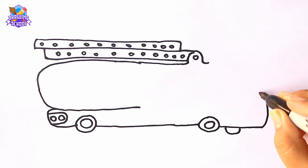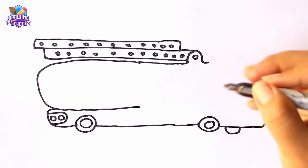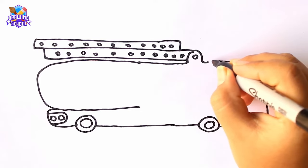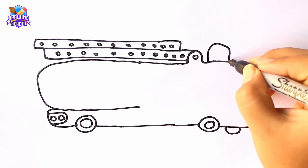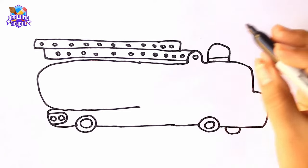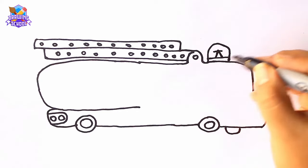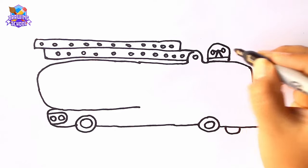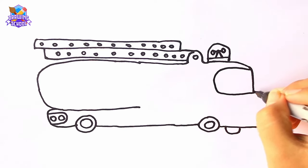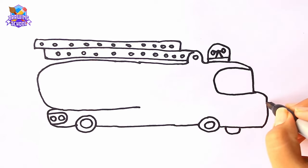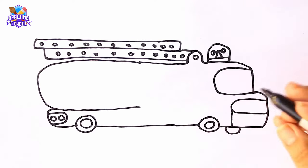We draw a line going up like this. And we close it. Now a big siren so they know help is coming. The windshield and the front lights too. Some more details.